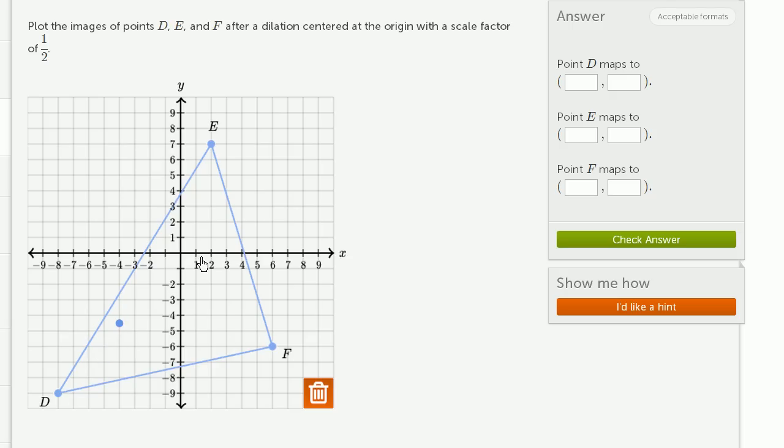Now let's think about point E. E is two more than the origin in the x direction, so it's only going to be one more once we scale it by half. And it's seven more in the y direction, so it's going to be at 3.5. Seven times 1/2 is 3.5. So we're going to stick it right over there.